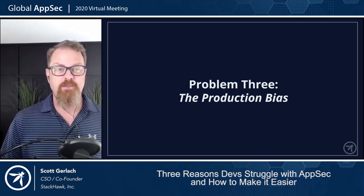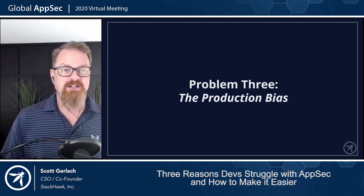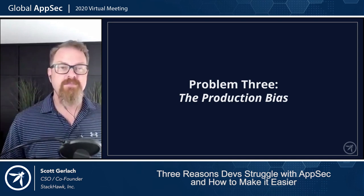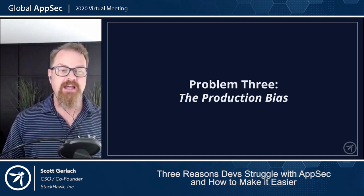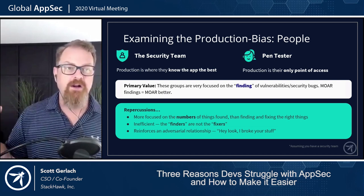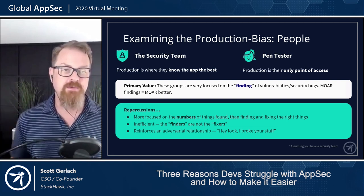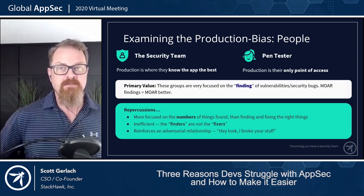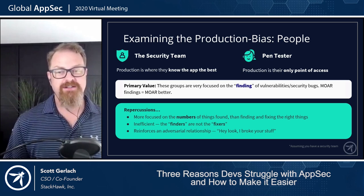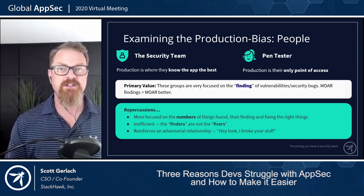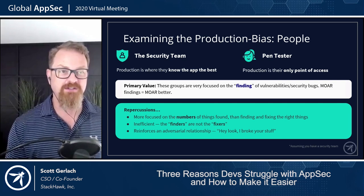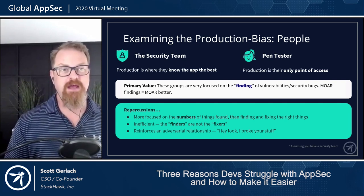The production bias. All of these things are set up so that they can easily run in production, and there are a bunch of problems with that. The security team is usually one of the first to experience one of these AppSec tools, and the first place they run the tool is in production because that's where they know the application the best.